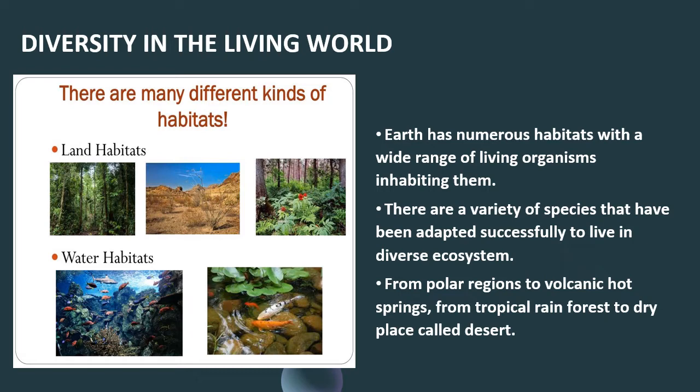There are a variety of species that have been adapted successfully to live in diverse ecosystems. You can see many species in the polar region even though it is very cold — the animals have that kind of adaptation to survive in cold regions. In hot springs also, few species can live, like bacteria. From tropical rainforest to dry places called deserts, many organisms can survive according to their adaptations.